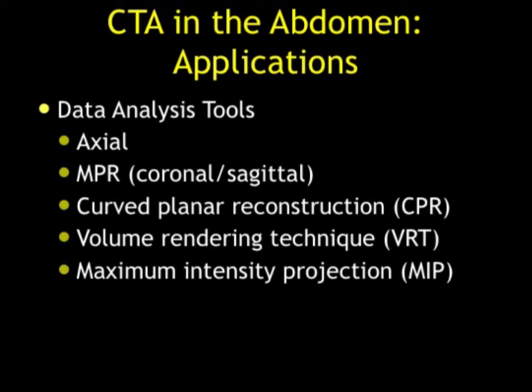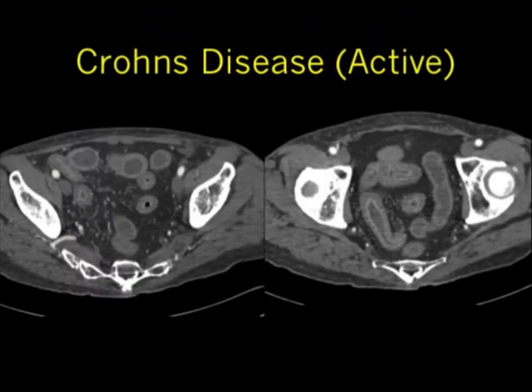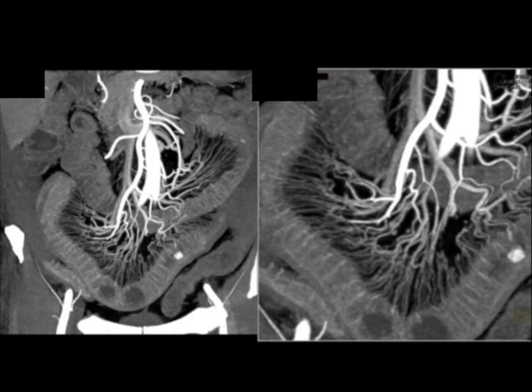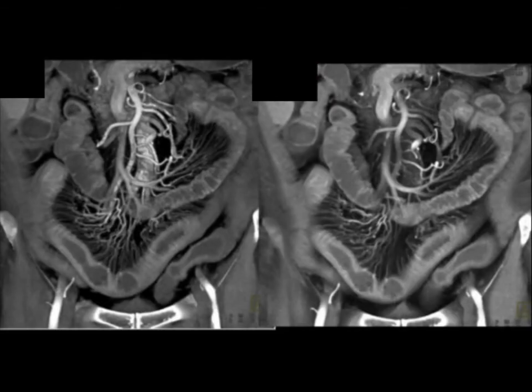I like to show this case making the point that yes, you see the Crohn's thickening and small bowel here with mucosal enhancement. But you see it a whole lot better on the coronal and appreciate the extent better. You see it much better when you look at the MIP imaging and see the vascularity and the comb sign, and even better on the volume rendering where you see the thickening of the bowel and the vessels. It really is a combination of techniques that optimize visualization.